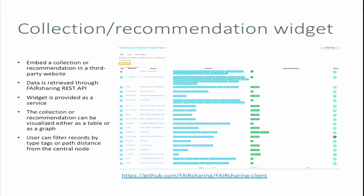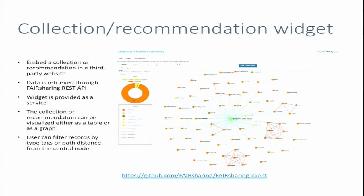This is a library designed with React. It can be used as a standalone library or accessed as a service, and it interacts with the FAIRsharing API. It provides a tabular view or a graph connectivity map. Both can be filtered according to the record type, the tagging system, and the distance in the graph from the central node, which in this case is the policy.